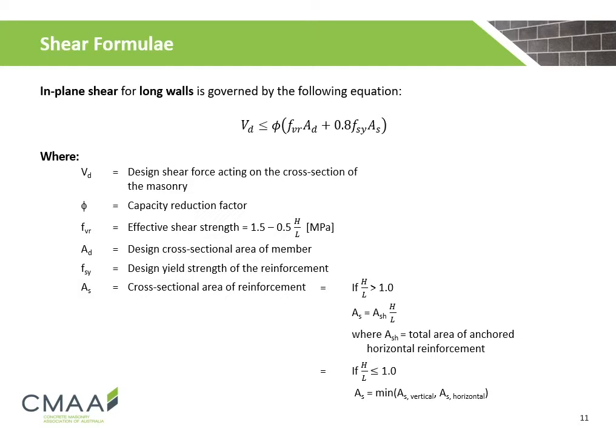If the height-to-length ratio of the wall is greater than 1, then the cross-sectional area of the reinforcement shall be taken as the product of the wall ratio and the total area of the horizontal reinforcement. If the height-to-length ratio is less than or equal to 1, then the cross-sectional area of the reinforcement shall be taken as the minimum of the vertical and horizontal reinforcement.